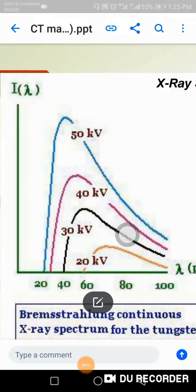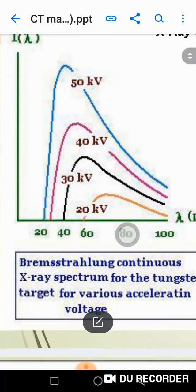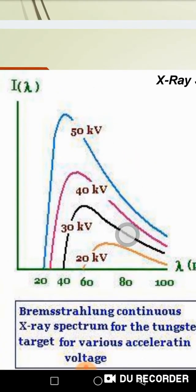The X-rays coming out do not carry a single energy — they are not mono-energetic, but poly-energetic. If I set the voltage to 120 kV, then the highest energy that these photons will carry is 120 kV.